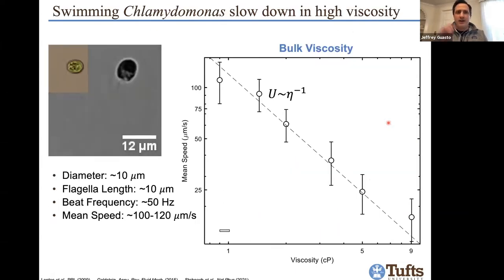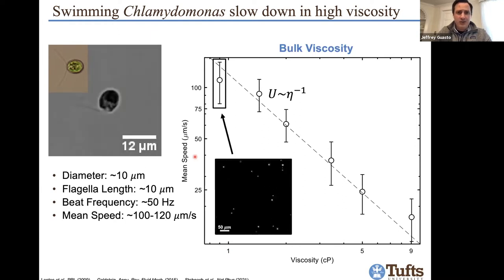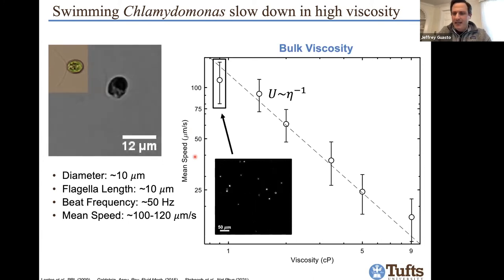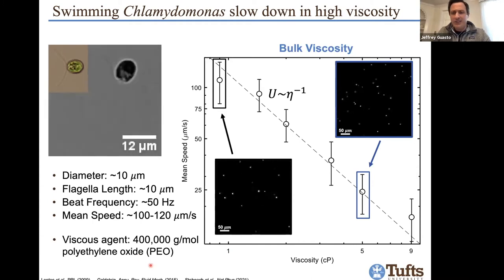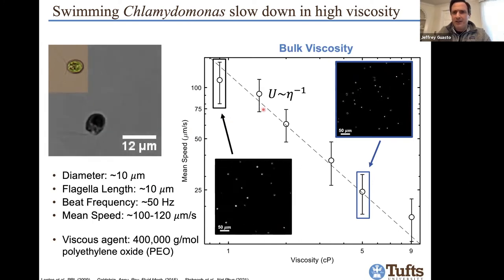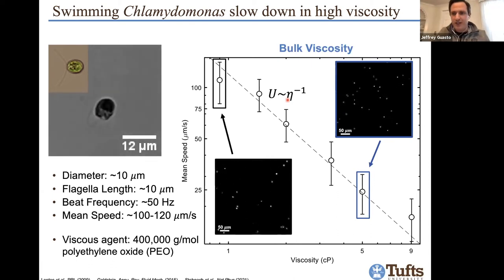We started pretty simple by repeating experiments where we increase viscosity and observe swimming speed. At low viscosity, cells swim fast — about 100 microns per second, or 100 body lengths per second. As you increase viscosity the cells slow down. We use polyethylene oxide, which the cells don't metabolize or chemotax toward. There's a nice relationship where swimming speed is inverse to fluid viscosity, consistent with roughly constant power output from the flagella, at least in this regime.